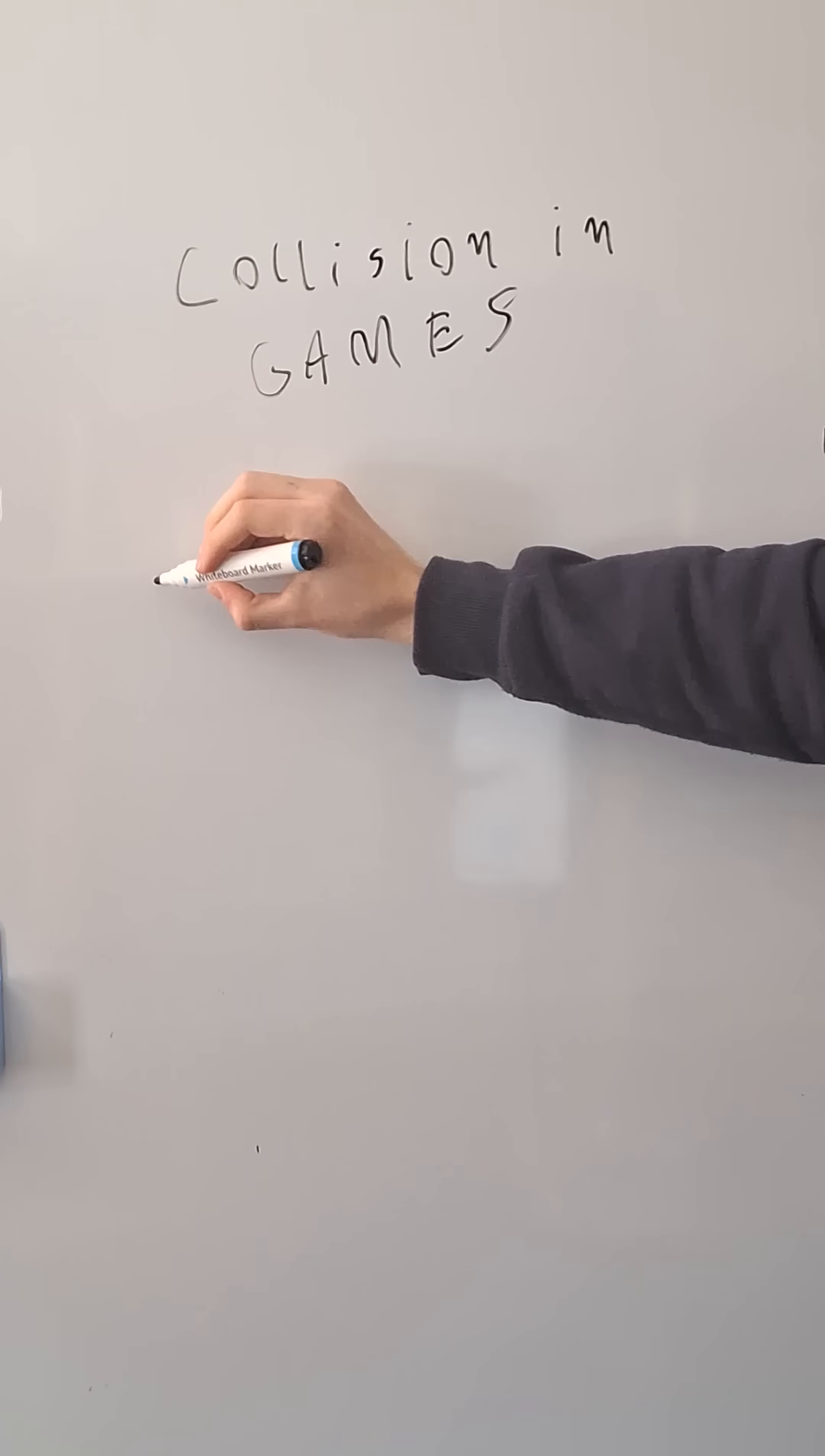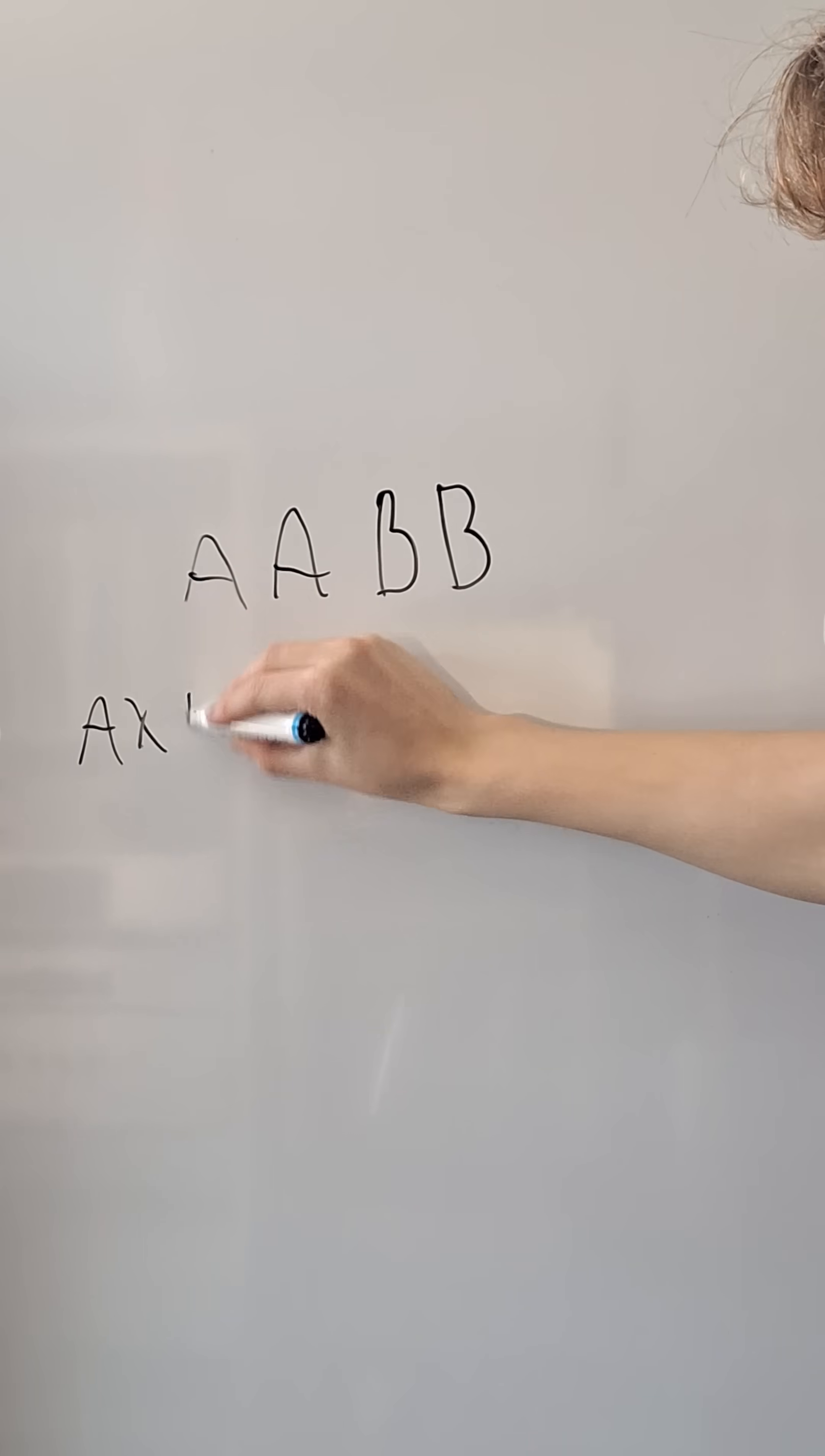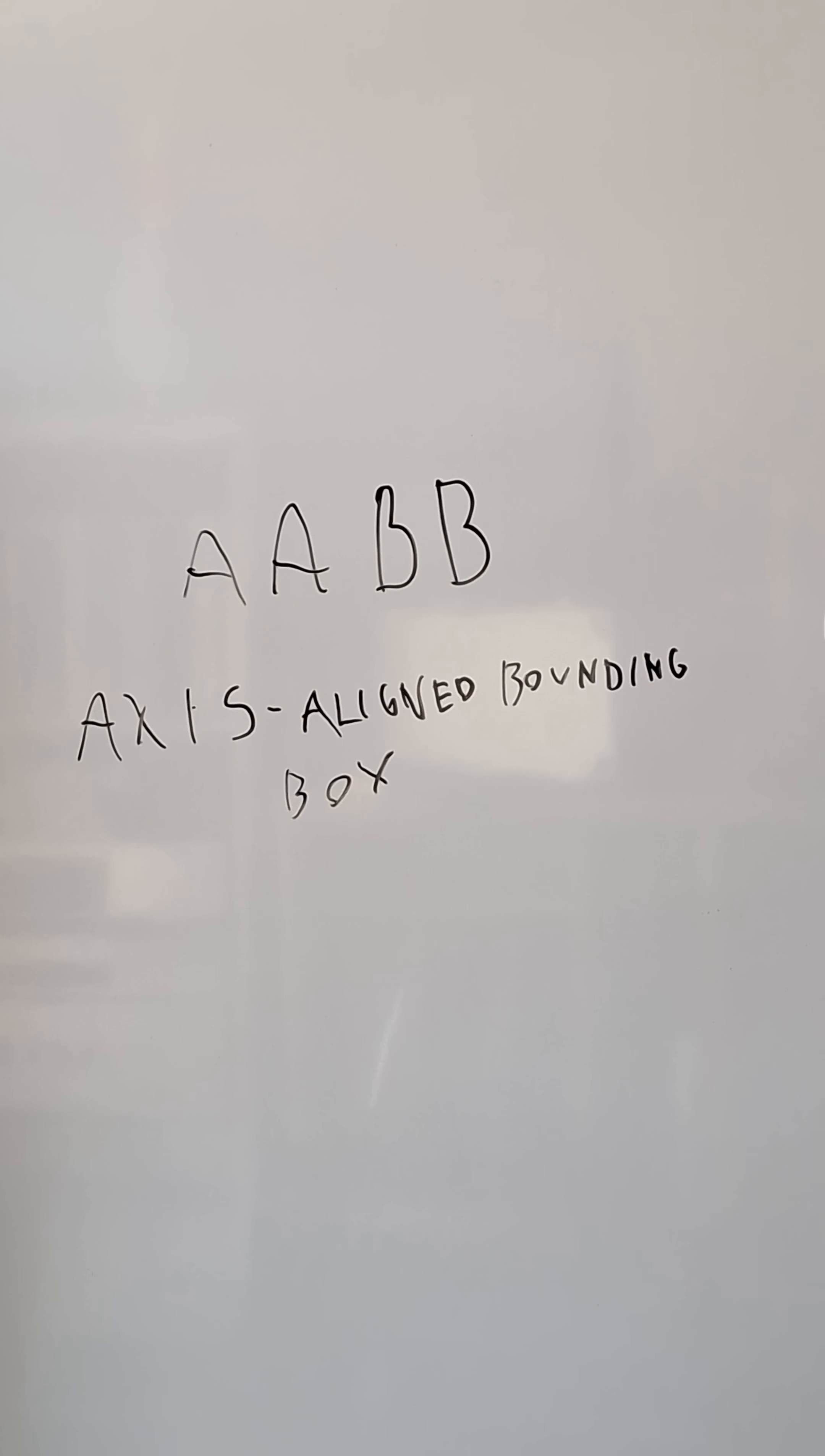There are many different ways to calculate collisions in games, but today I'll explain one of the easiest. AABB or Axis Aligned Bounding Box is a method of calculating collisions between two rectangles.